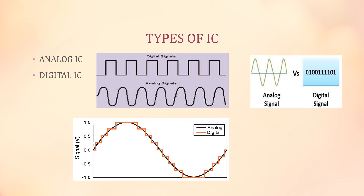Here come the types of integrated circuit. Integrated circuits are classified into analog integrated circuits and digital integrated circuits. Analog signals are continuous signals — they follow a path like a sine wave, continuously taking positive and negative values. Digital integrated circuits take only discrete signals, that is ones and zeros — binary values. In a microcontroller we use digital ICs, which take values of zero and one. The next type is a hybrid IC, which is a combination of both analog and digital signals.